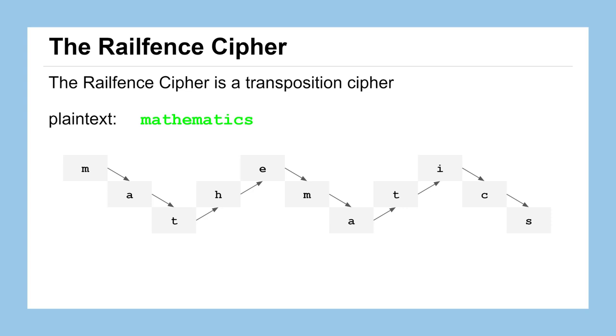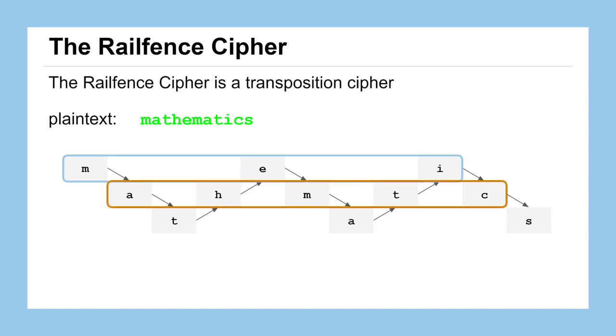Like we did in the two row railfence, we'll take the top row to make our first group. The middle row now will become our second group and the bottom row will become our third group. Putting them together in order will give us a ciphertext of m-e-i-a-h-m-t-c-t-a-s and we've color coded them to keep track of where they came from.